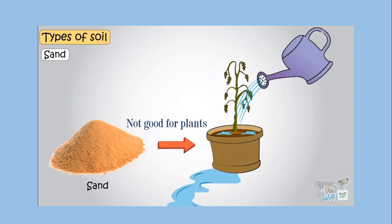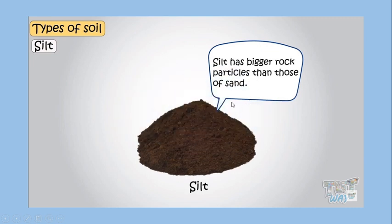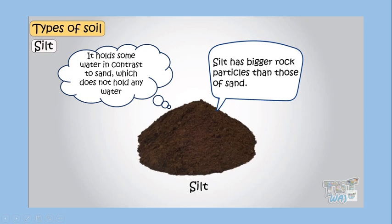Sand is not good for plants. Why? Because sand cannot retain water. When we use sandy soil to grow plants, the water we pour for the plants will drain out, so no water is retained in the soil. How about silt? Silt has bigger rock particles and holds some water — in contrast to sand, which does not hold any water. Silt or lumpur can retain some water.